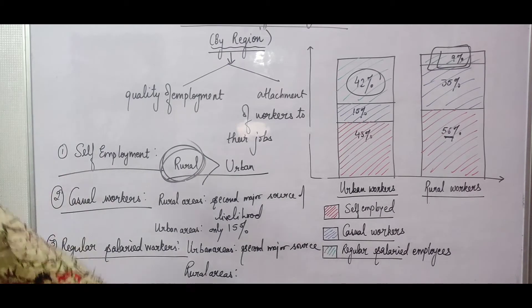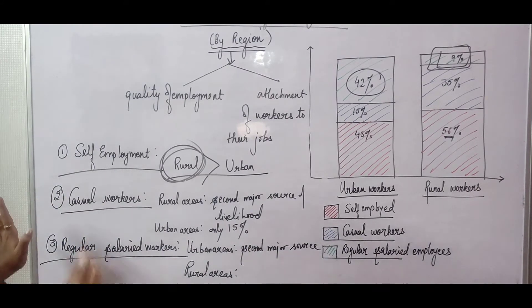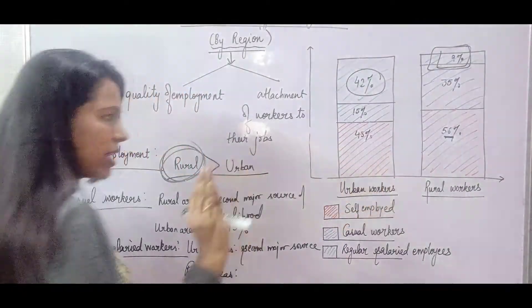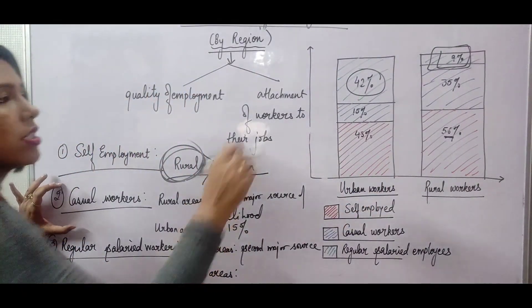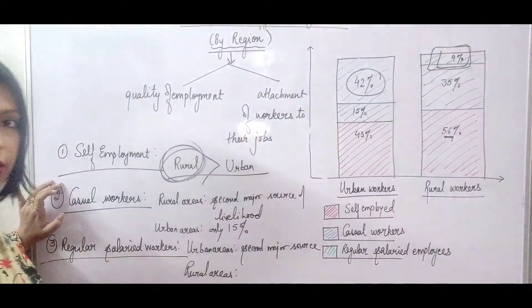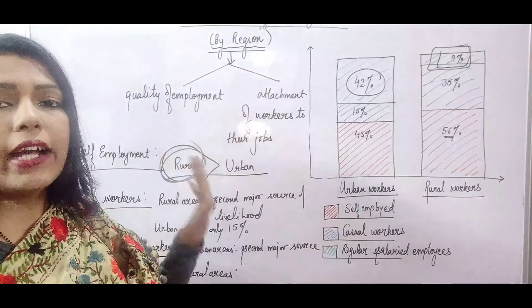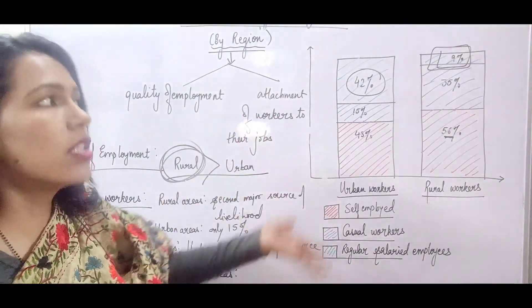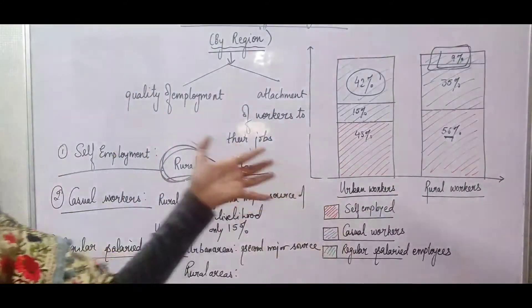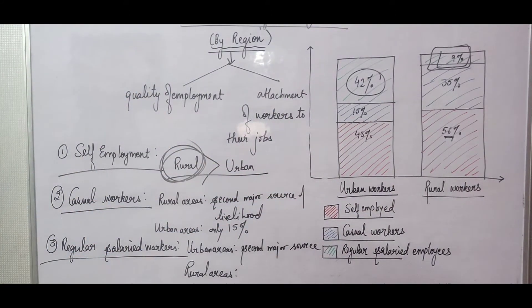In summary, we have discussed distribution of employment by region. The most major source in both areas is self-employment. Casual workers are the second major source in rural areas, and regular salaried jobs are the second major source in urban areas. We discussed why urban areas have more opportunities, and why urban people acquire higher levels of skills, while rural areas have neither the opportunities nor the higher level of qualification.